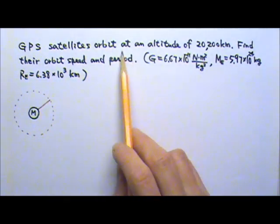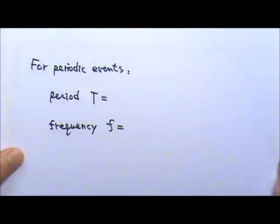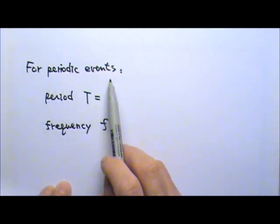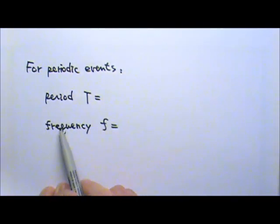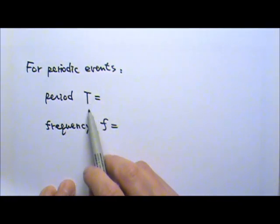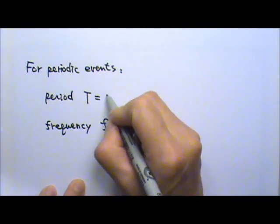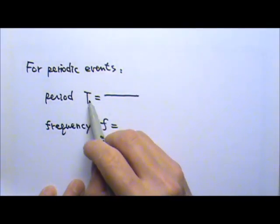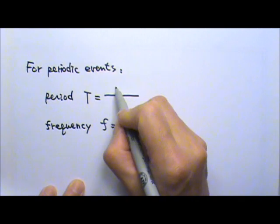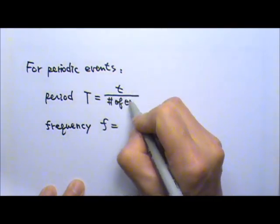Now, I asked you about the period, but we haven't really talked about the term period. So let's go over these. For periodic events, we can talk about these two terms: period and frequency. For period, we use capital T. I know we have used capital T before for tension. Right now, we're reusing the letter T for period over here. The definition for the period is the time it takes for each event. So the time divided by the number of events.